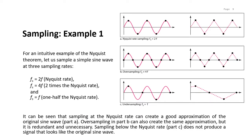Let's see an example on sampling. We want to sample a simple sine wave at three different sampling rates. First, Fs equals 2f, which is the Nyquist rate. Then Fs equals 4f, which is two times the Nyquist rate. And then Fs equals f, which is one half the Nyquist rate. In this figure you can see the sampling and the subsequent recovery of the signal. Sampling at the Nyquist rate of Fs = 2f creates a good approximation of the original sine wave.